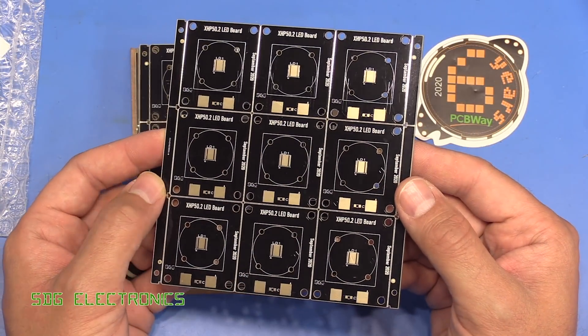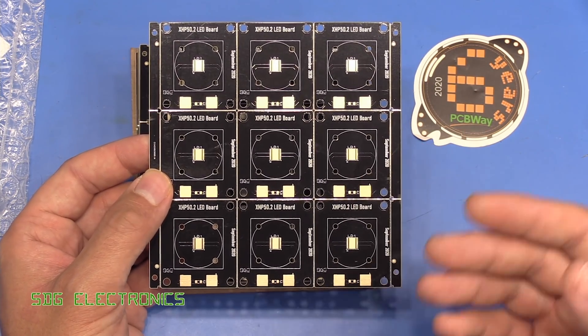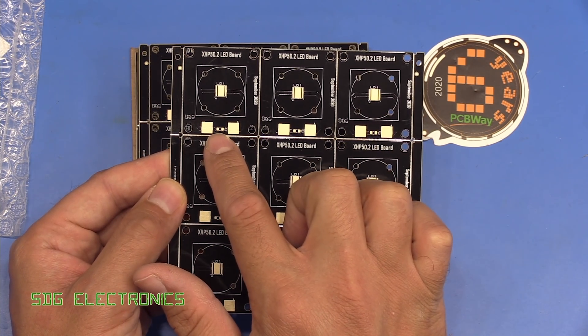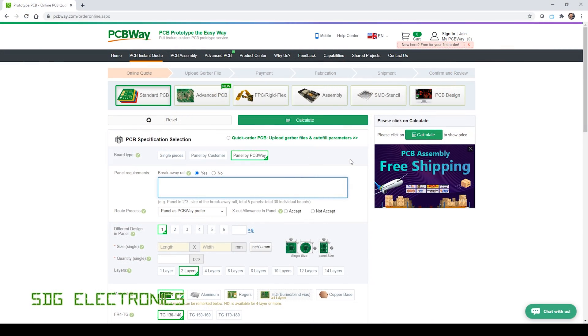We've got them panelised by PCBWay this time. So rather than handing them the panel files, I just sent the individual board because there were a few changes to make. Then I used the tool on the website. When you go to the online quote tool, you can select panel by PCBWay if you only want to upload a single PCB file.